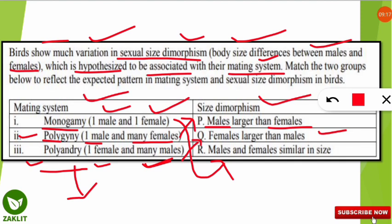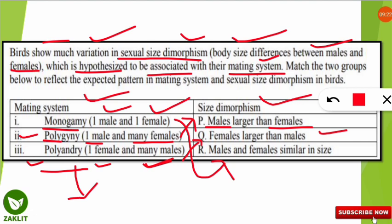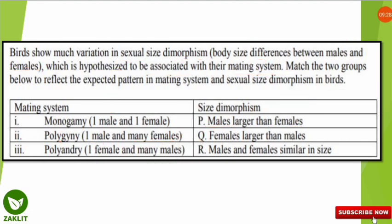In this video, we learned the five eco-geographical rules — Allen's, Bergmann's, Jordan's, Gloger's, and Rens' Rule — along with brood parasitism and sexual size dimorphism. I hope you enjoyed the video. If you liked it, don't forget to subscribe to the channel. See you in the next video.